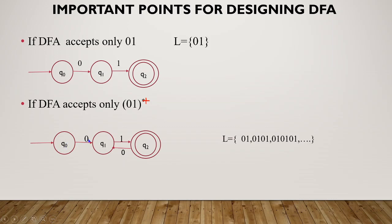Q0 on input 0 goes to Q1. Which means 0,1 will be accepted. Q0 on 0 goes to Q1. Next, Q1 on 1 goes to Q2, which is the accept state. 0,1 will be accepted. This is the next step.